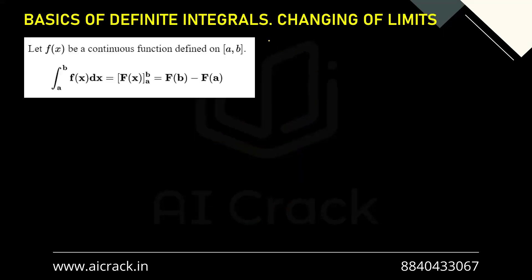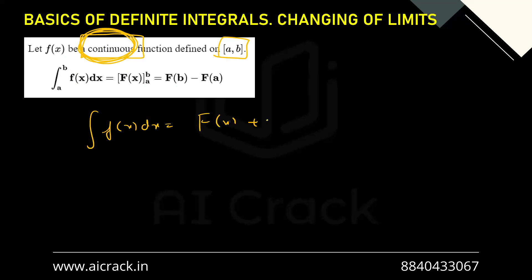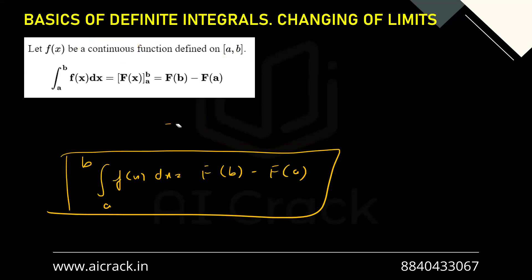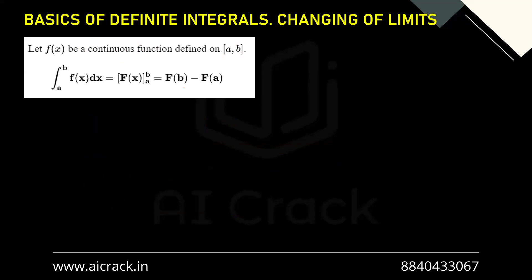Now let's talk about basics of definite integrals and changing of limits. Let f(x) be a continuous function — this is the most important keyword. Let f(x) be a continuous function defined on [a, b]. Whenever this is happening, we can write the integral as F(b) minus F(a). So if the integral of f(x)dx equals capital F(x) plus C, then the integral from a to b of f(x)dx would be F(b) minus F(a). But the most important thing is the function should be continuous between a to b — only in that case will you be able to use this particular formula.